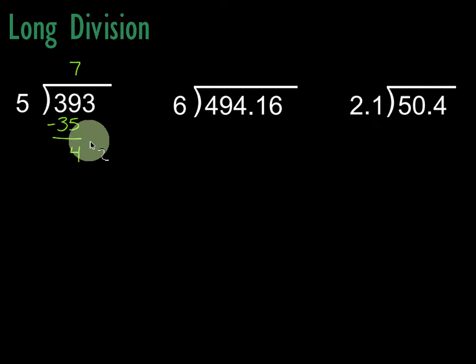Once we do that, we bring down our next digit, that 3. Then it's the same process. 5 times what gets us close to 43? Well, 5 times 7 is 35, 5 times 8 is 40, so we'll put an 8 up there. 8 times 5 is 40. Then we subtract: 3 minus 0 is 3. One way to deal with this is we could say 78 remainder 3, or R3. Another way is as a fraction: 78 and 3 fifths.